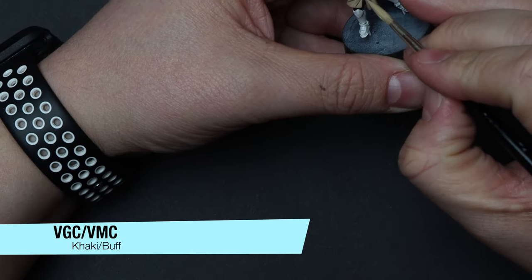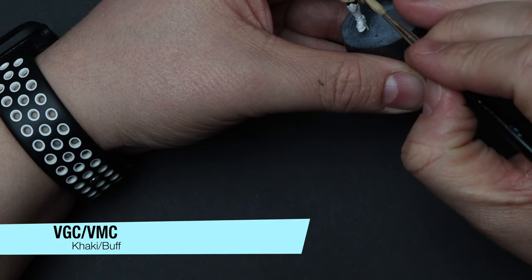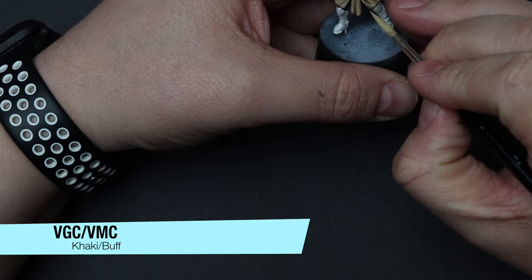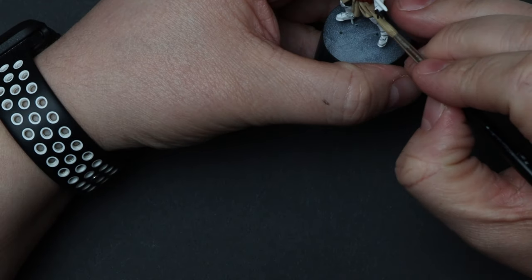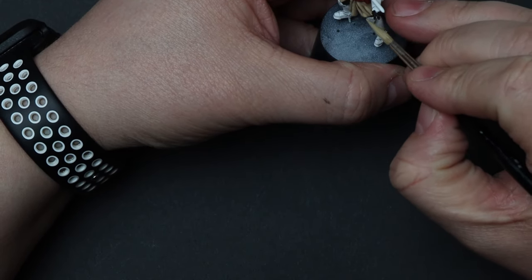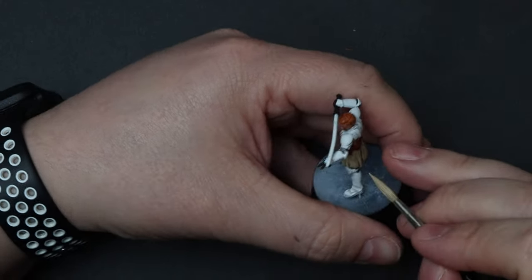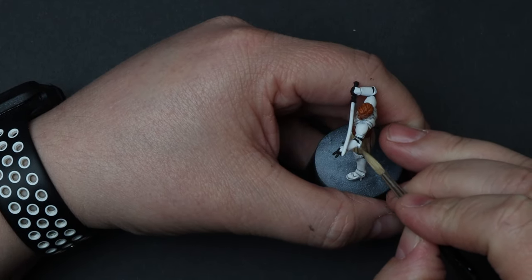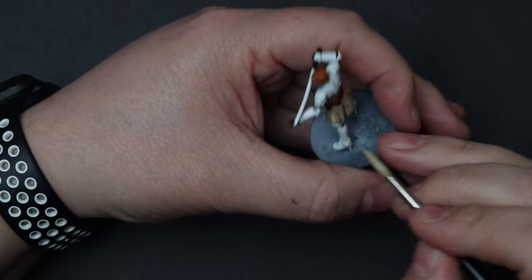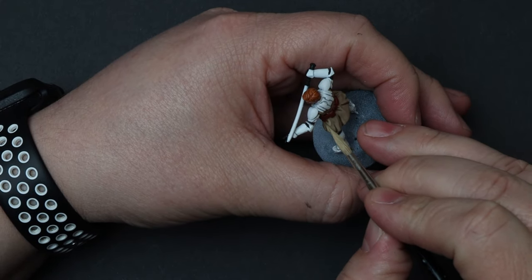While we let his hair and face dry, why not go ahead and start doing some highlights. I'll be starting off with the robes, doing somewhere around a 2 to 1 mixture of khaki and Vallejo monocolor buff. I want to focus on the edges of the cloth, any high areas, and especially the folds of the cloth themselves.